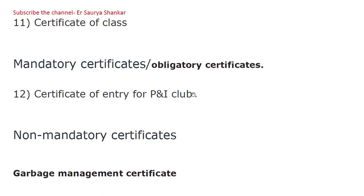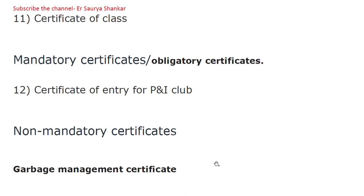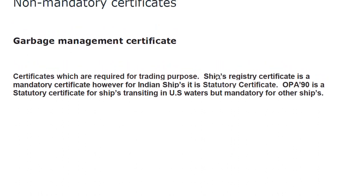Mandatory certificates — also known as obligatory certificates — include the Certificate of Entry of P&I Club. There is also a third category: non-mandatory certificates, such as the Garbage Management Certificate, which is not required but can be held. Ships Registry Certificate is a mandatory certificate for most ships; however, for Indian ships it is a statutory certificate, as it is required by Indian law. Statutory and mandatory status can vary from country to country — for example, OPA 90 is a statutory certificate for ships transiting in US waters but mandatory for all other ships.